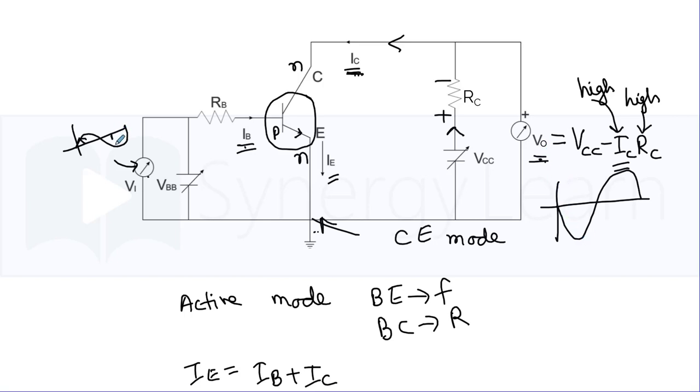Again, when the input section goes into negative cycle, then the forward biasing decreases, and as a result the collector current decreases by a large amount and the fluctuation now goes into the positive part.